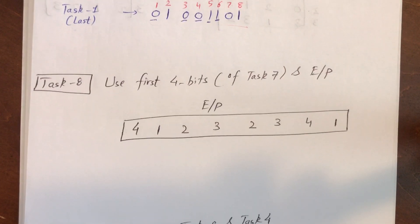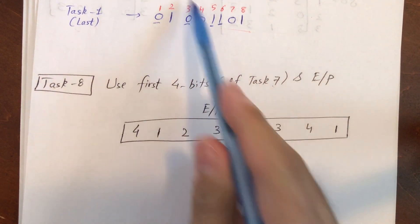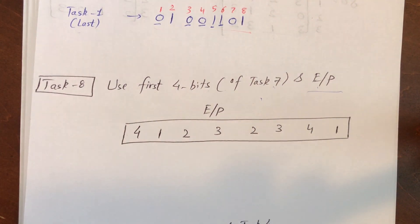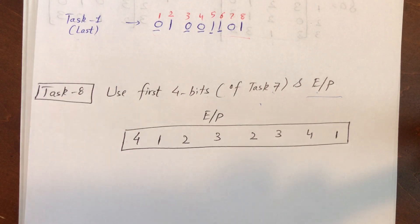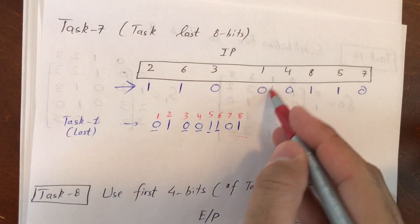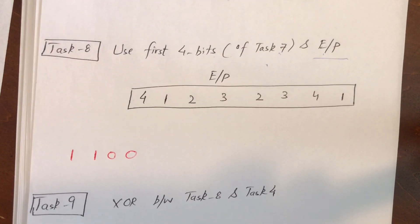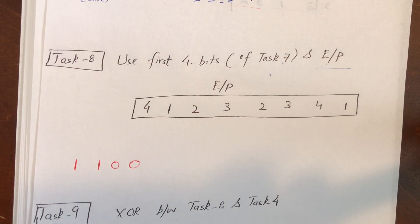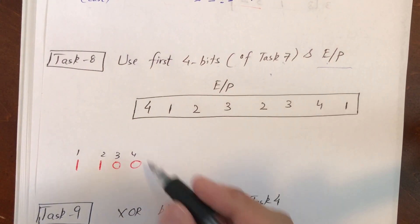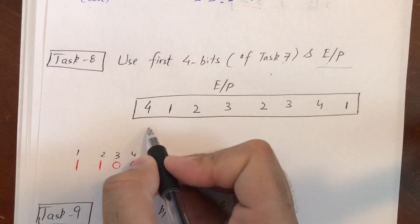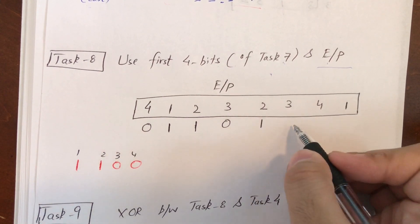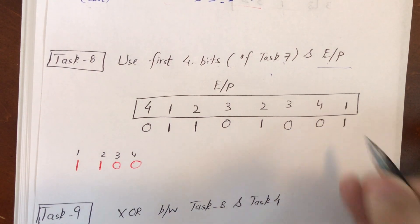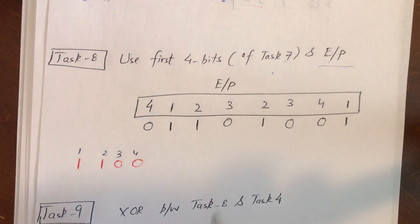Task 8: use the first four bits of the Task 7 output and apply the Extended Permutation (EP) to expand them from 4 bits to 8 bits. The IP result begins with 1 1 0 0, so the first four bits are 1 1 0 0. Write numbering 1 through 4, then expand according to the EP pattern: position 4, 1, 2, 3, 4, 1 — giving: 0 1 1 0 0 1. This is the EP output.